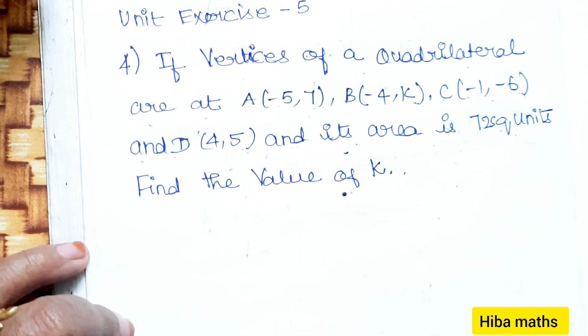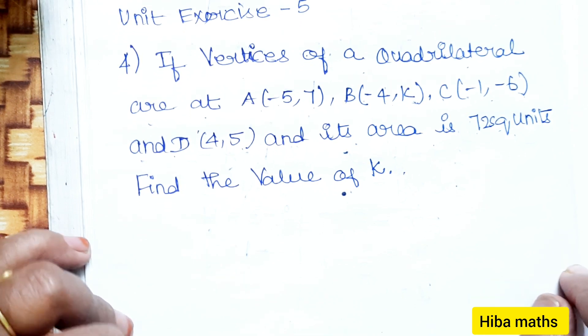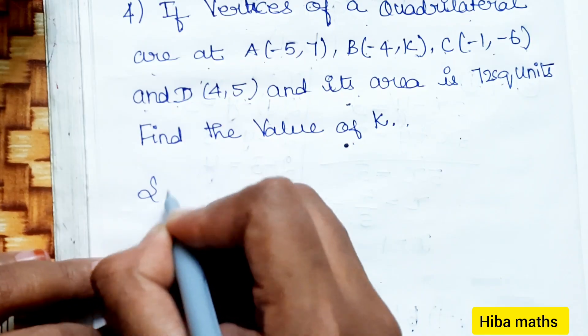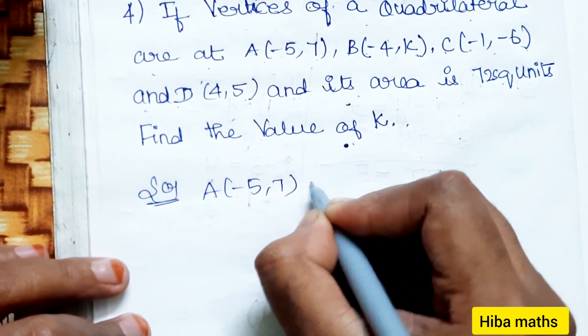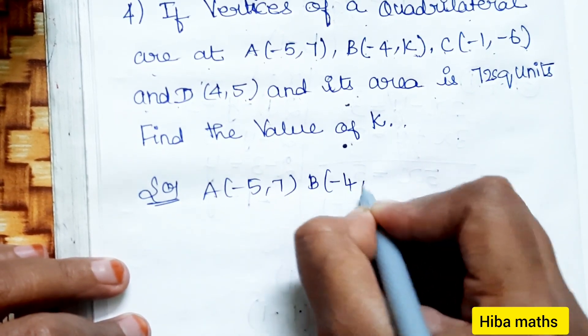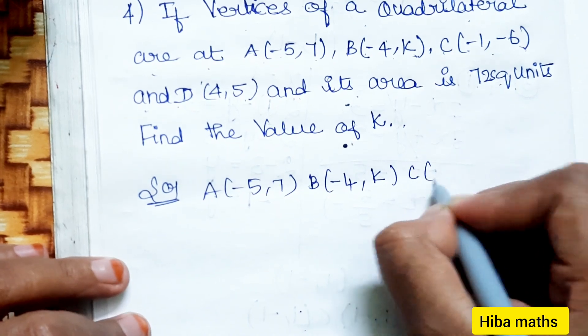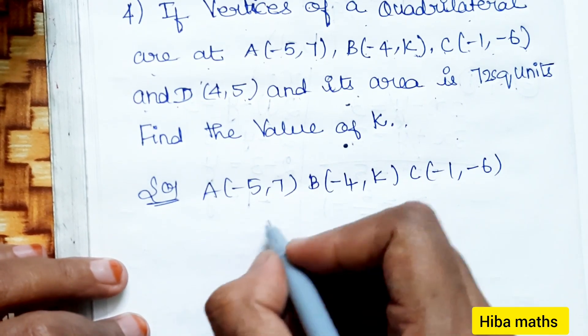Area of quadrilateral at A(-5,7), B(-4,K), C(-1,-6), D(4,5).